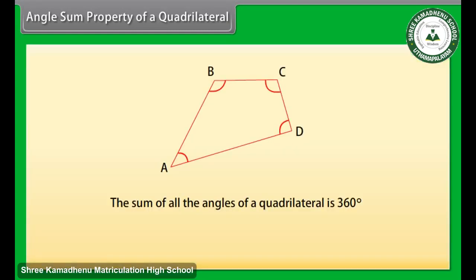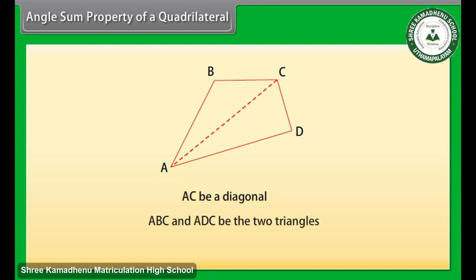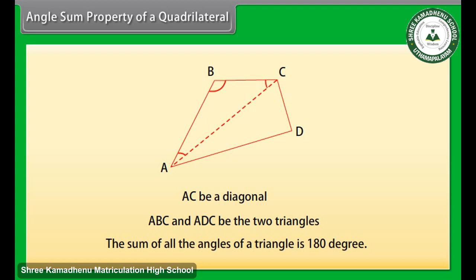Angle sum property of a quadrilateral: the sum of all the angles of a quadrilateral is 360 degrees. This is called the angle sum property of a quadrilateral. To find the sum, let's divide this quadrilateral into two triangles by drawing a diagonal. Let AC be a diagonal, and ABC and ADC be the two triangles.